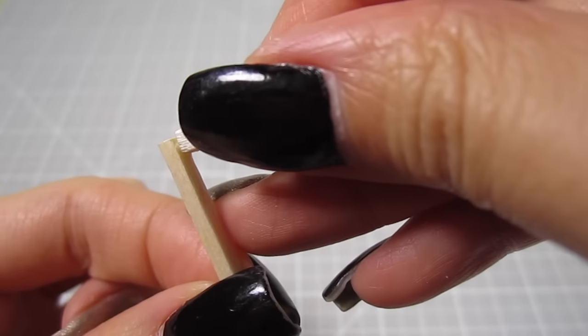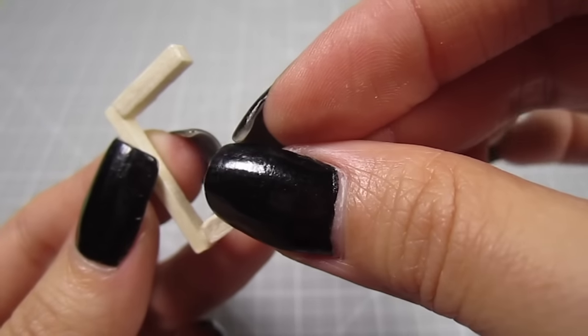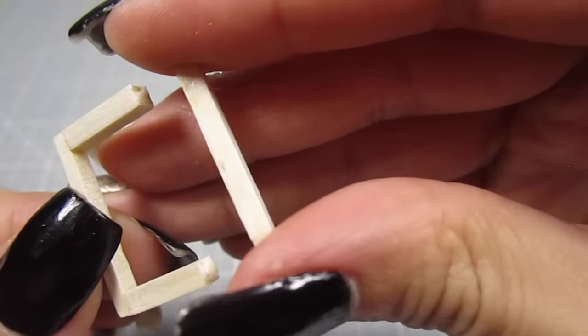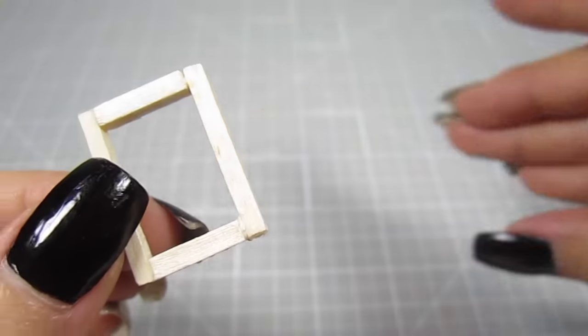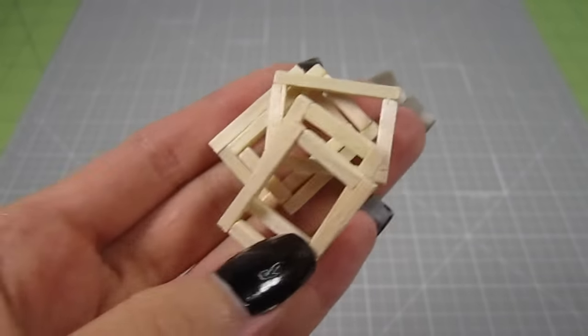These 4 sections will form a rectangle. I glue them together using some wood glue. Make 5 of these rectangles.